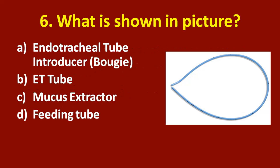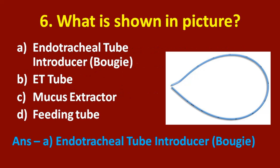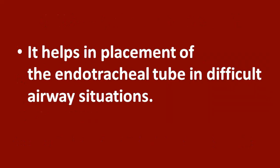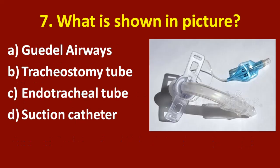Sixth question: what is shown in the picture? Option A: endotracheal tube inducer bougie. Option B: ET tube. Option C: mucus extractor. Option D: feeding tube. The correct answer is option A, endotracheal tube inducer bougie. It helps in placement of the endotracheal tube in difficult airway situations.